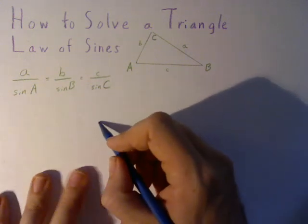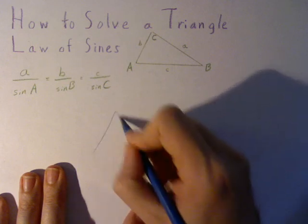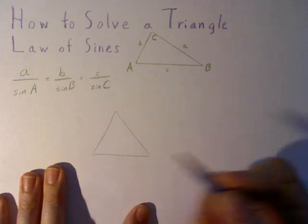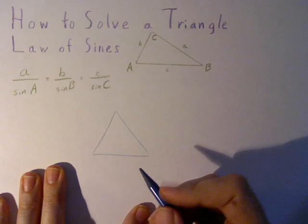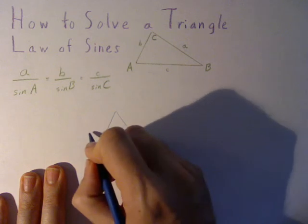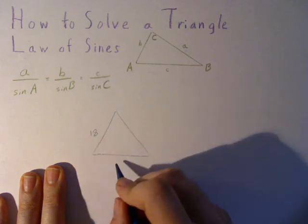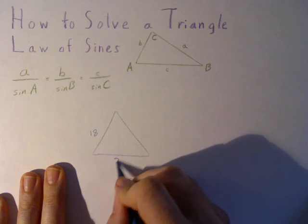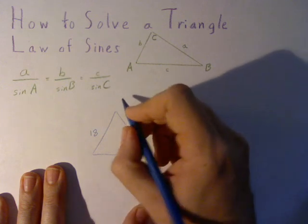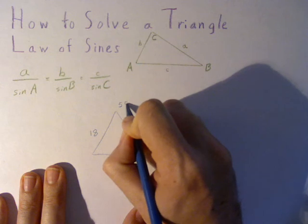An example we're going to do, we'll start with a triangle that we only know a limited amount of information about. We know that we have a side that is 18, a side that is 21, and an angle that is 55 degrees.